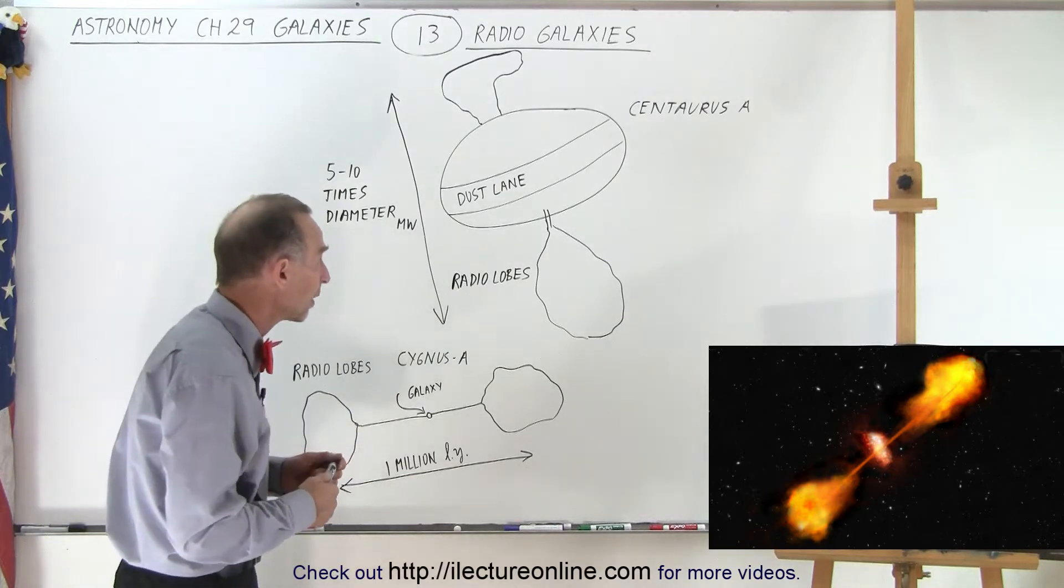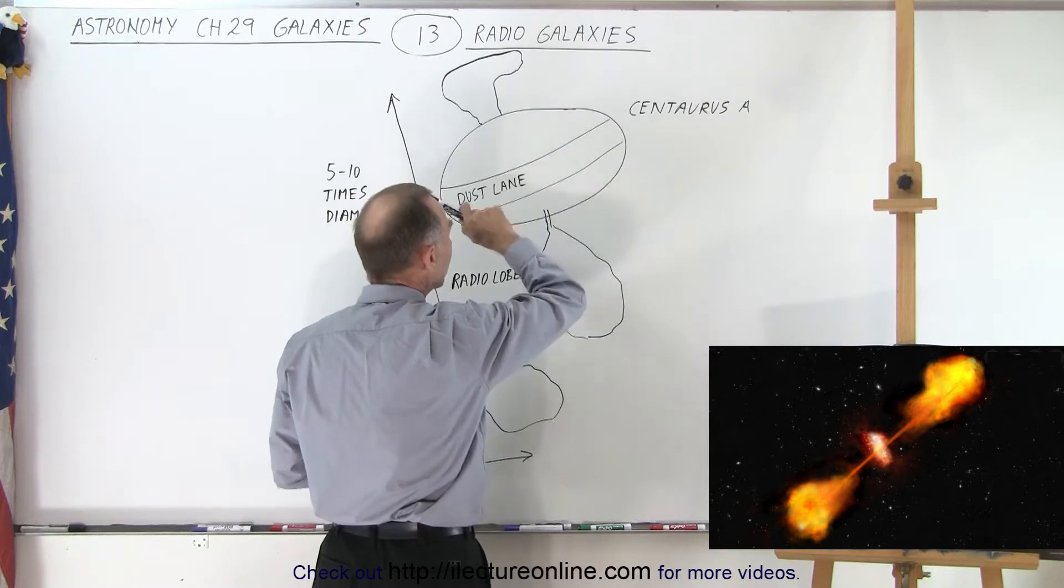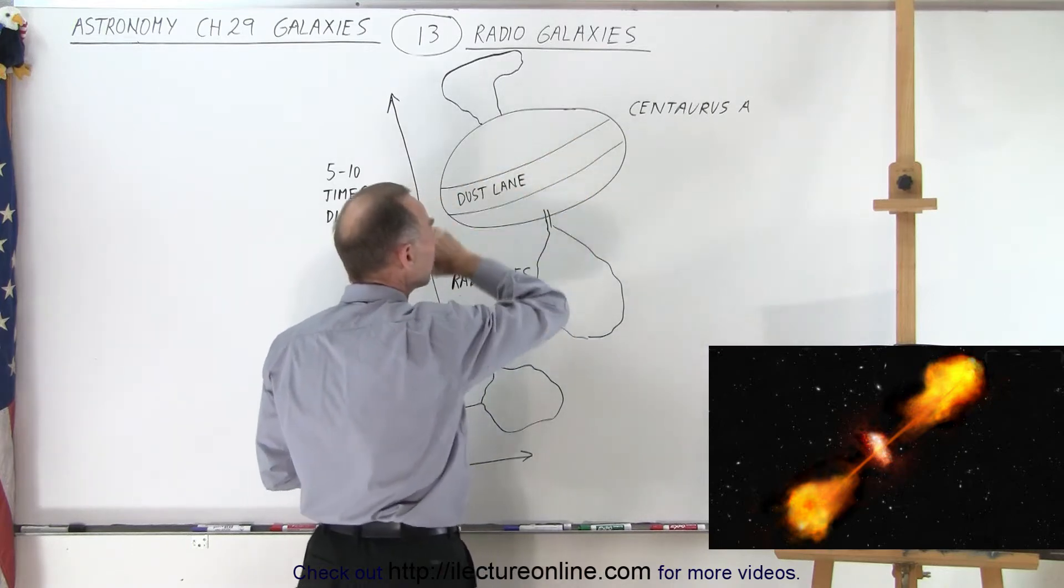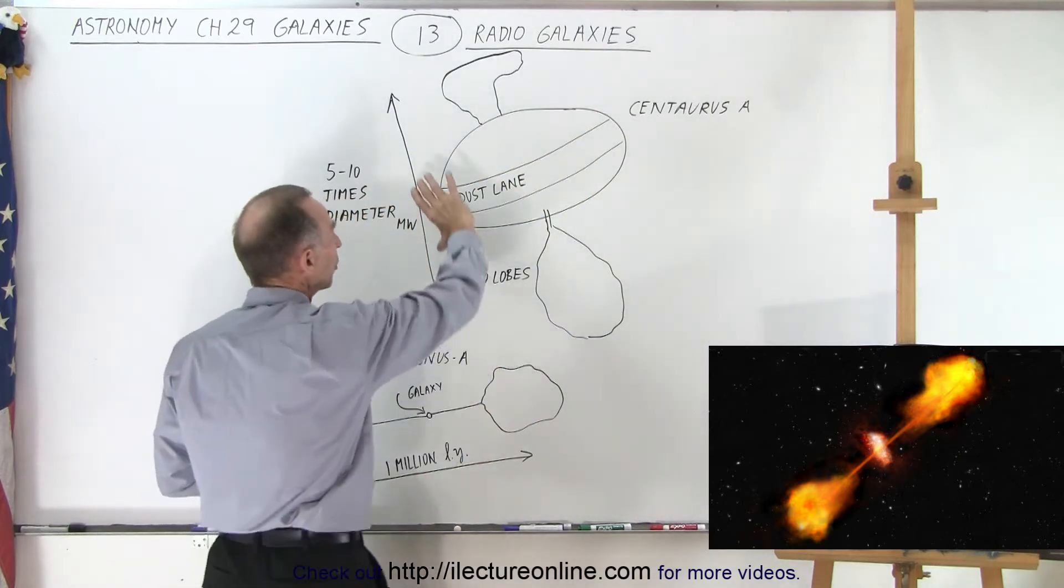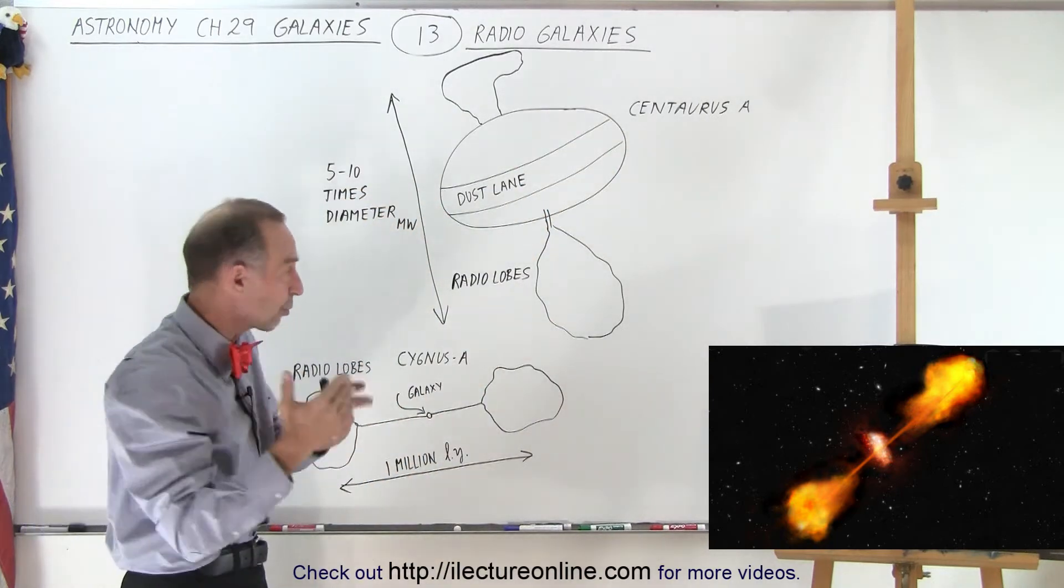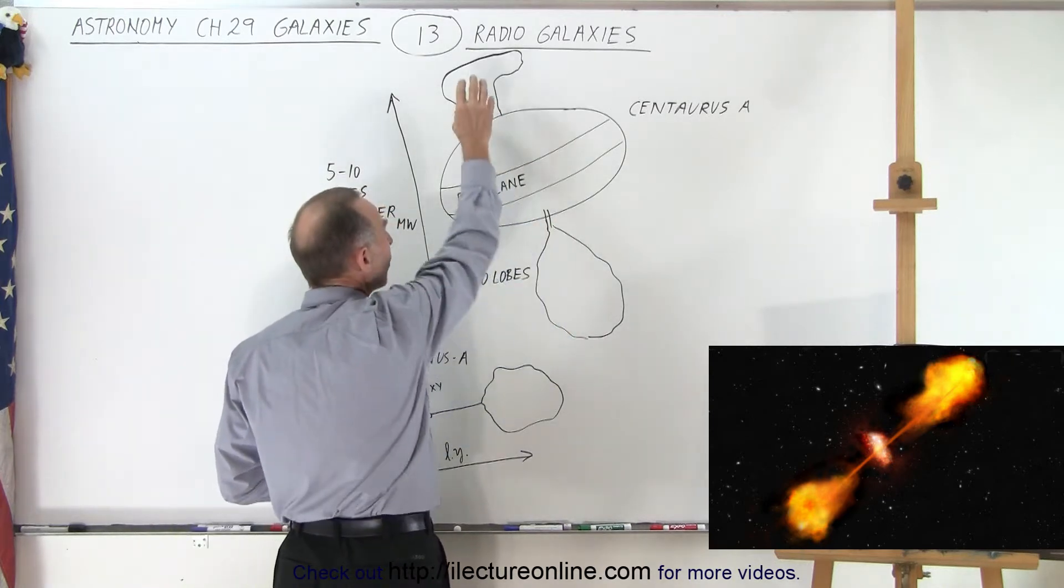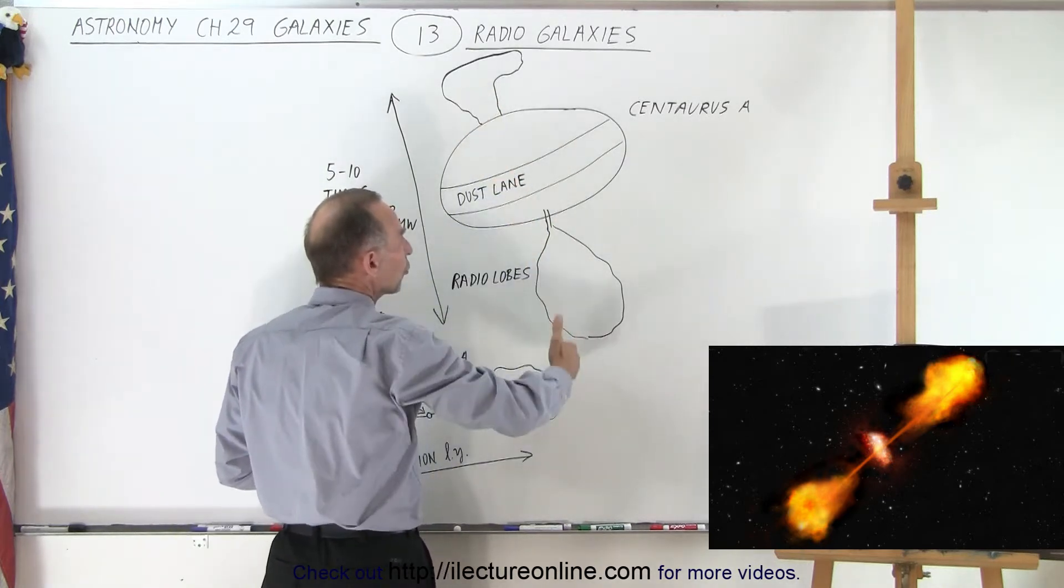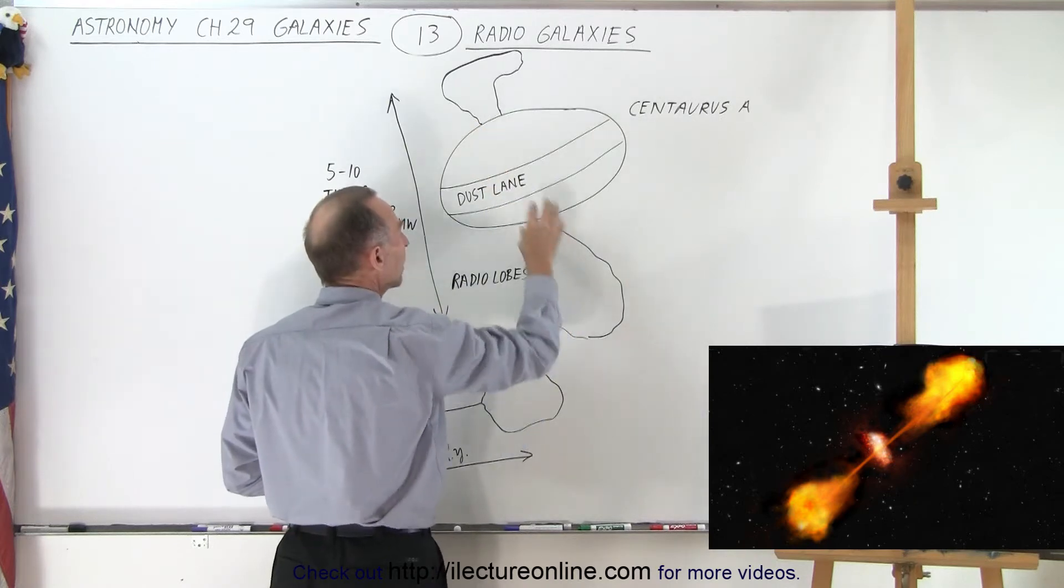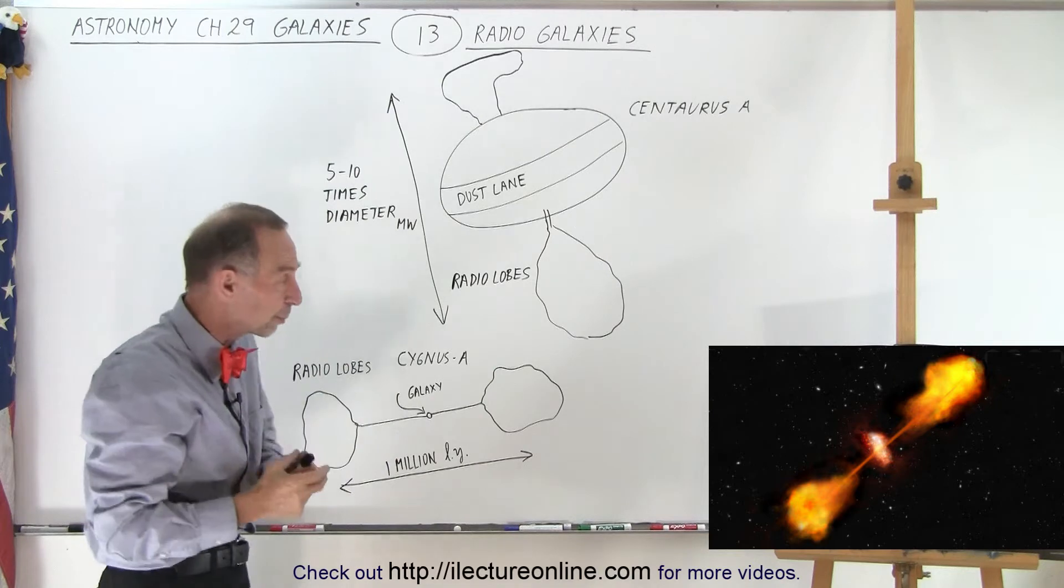So here we have a couple of galaxies. For example, we have Centaurus A, which is an enormously large galaxy with a huge dust lane going through the middle. In visible light, we would only see this portion right here. But when we took a radio telescope and pointed in the same direction, we started seeing an enormous amount of radiation coming from the two ends perpendicular through the galaxy. Those were then called radio lobes because an enormous amount of radio radiation was coming from those radio lobes.